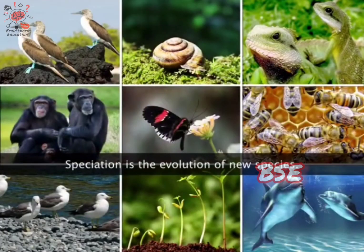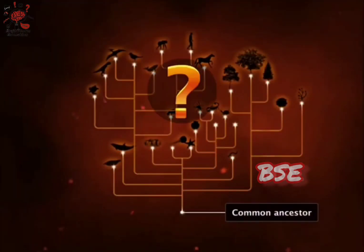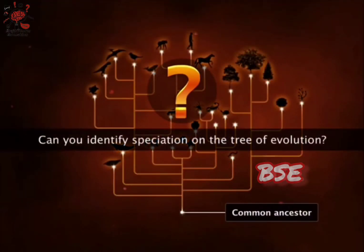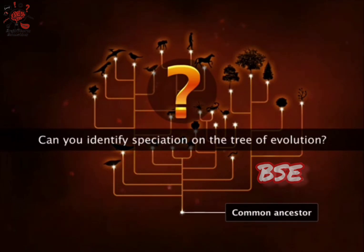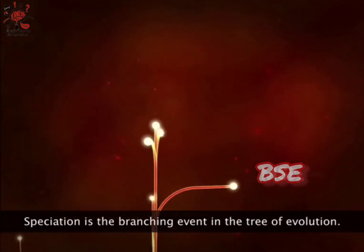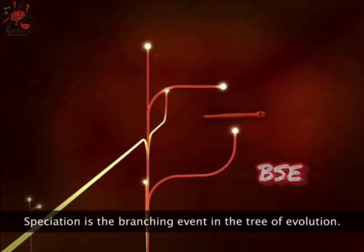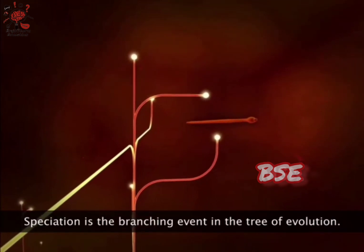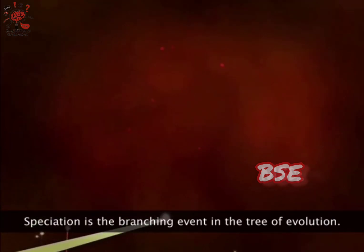The process by which new species are formed is called speciation. In this tree of evolution, can you identify which points correspond to speciation? All the branching points are the points of speciation — these are the points where a large group or a family of organisms diverge to form two or more species.